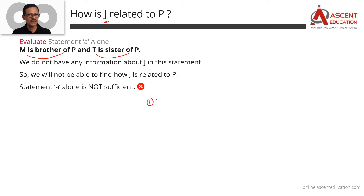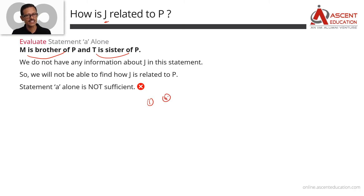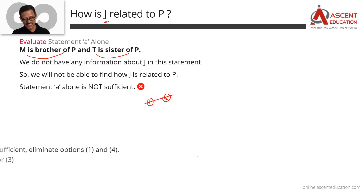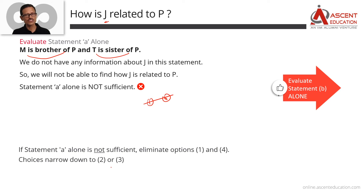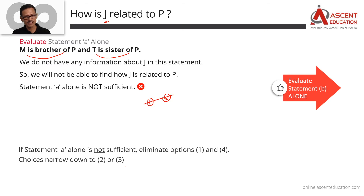Since A alone is not sufficient, we cannot eliminate answer option 2, which says B alone is sufficient. If B alone is sufficient, there's no need to combine. Let's now move on to evaluating Statement B.